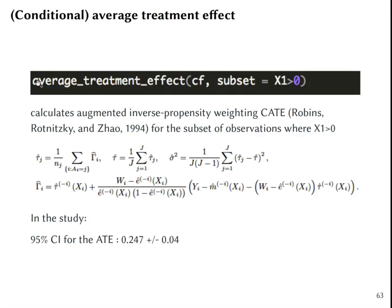Then we can ask the causal forest to provide us with average treatment effect for a certain subset of people. The average treatment effect calculates augmented inverse propensity weighting conditional average treatment effect according to these formulas.